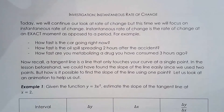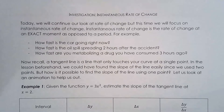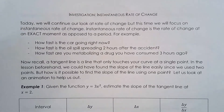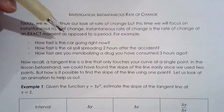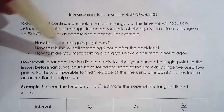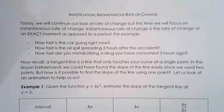Instantaneous rate of change — hopefully you remember from the previous lesson that when we talk about average rate of change, we're talking about the big picture: what's happening at the beginning, what's happening at the end, and then you average it out. But for instantaneous rate of change, you're looking at what's happening at a specific moment. Some examples: how fast is the car going right now? How fast is the oil spreading two hours after the accident? How fast is your body metabolizing a drug three hours after you've consumed it?